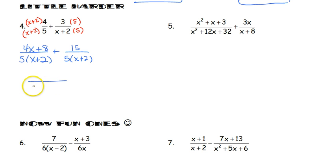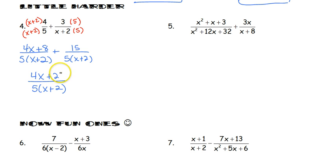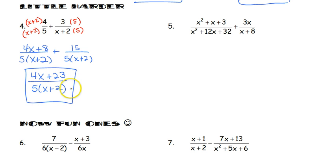Since we're adding and have the same denominator, we add the numerators together. 4 times x is 4x, 4 times 2 is 8, and 3 times 5 is 15. So 4x plus 8 plus 15 gives us 4x plus 23, all over 5 times (x plus 2). We check to see if anything else can be simplified, and there's nothing to simplify.